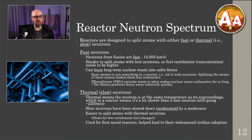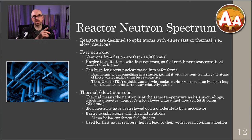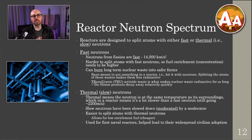Let's briefly talk about what is known as the reactor neutron spectrum. This sounds fancy, but it really just means reactors are designed to split atoms with either fast or thermal neutrons. This is from an earlier slide where I said a heat-generating reactor is not the same as a thermal reactor. Thermal you can also think of as slow, because that's what it really means — slow versus fast neutrons.